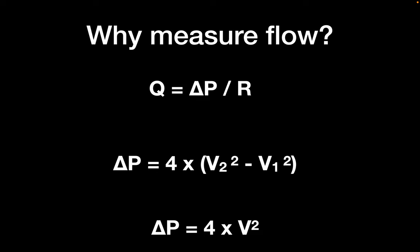This is the modified Bernoulli equation, which we'll come back to and explain in much more detail. For the moment, I'm just telling you that velocity of flow can be used to calculate pressure inside a chamber or inside a blood vessel.